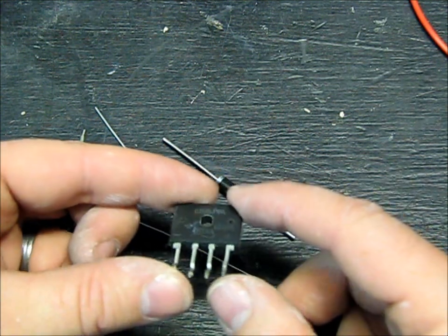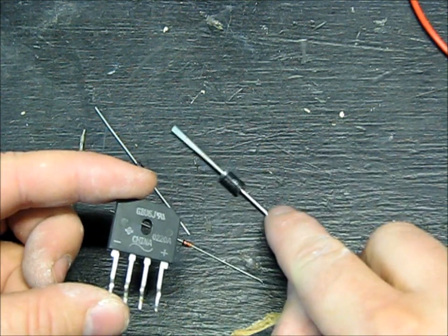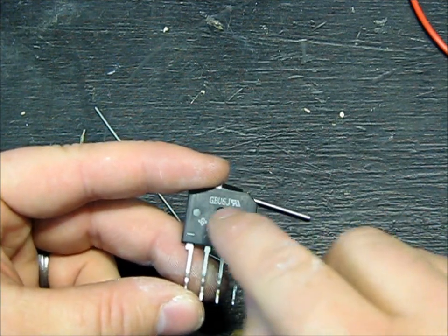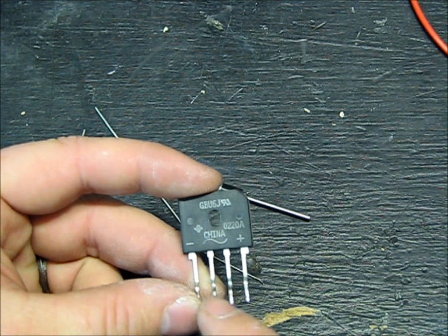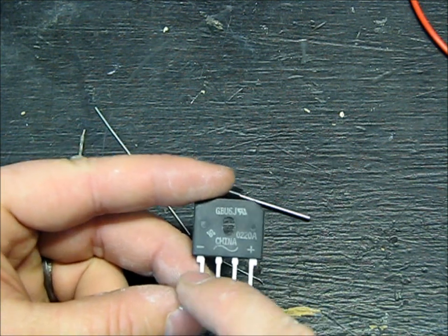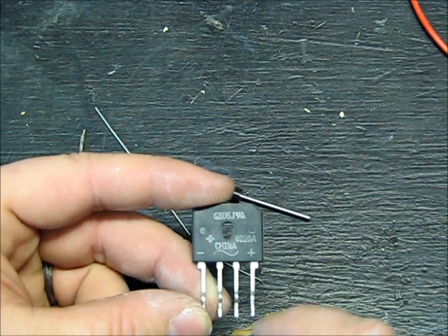This right here is a bridge rectifier, and there's actually four diodes like this in a configuration in here. So, you just put your alternating current on these two pins, and you get DC plus and minus out of these two pins.